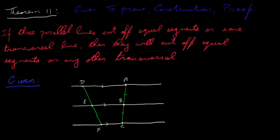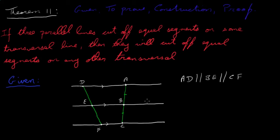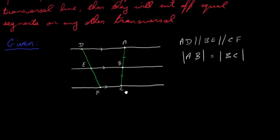We're given this diagram, and we're given that AD is parallel to BE, which is parallel to CF — in other words, these three lines here are parallel. We're also told that AB, the distance between A and B, is equal to the distance between B and C.